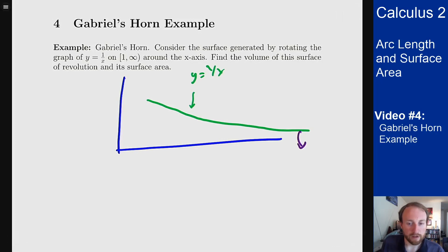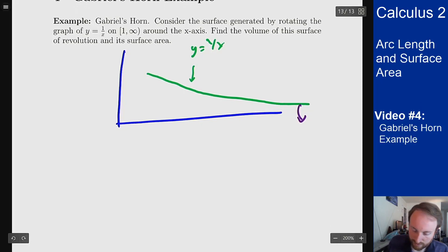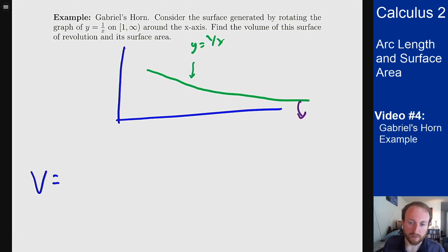Let's figure out the volume of this solid of revolution. The volume here is a normal volume of solid of revolution calculation.